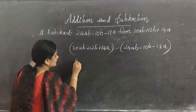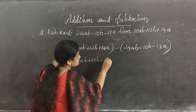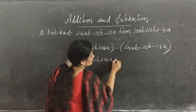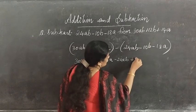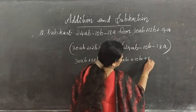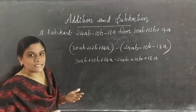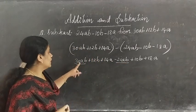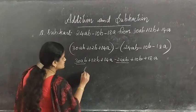We open the bracket: 30ab plus 12b plus 14a. Then: minus into plus gives minus 24ab; minus into minus gives plus 10b; minus into minus gives plus 18a.